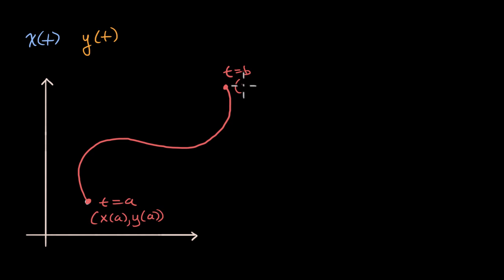So this point right over here is x of b, comma, y of b. Let's think about how do we figure out the length of this actual curve, this actual arc length from t equals a to t equals b.